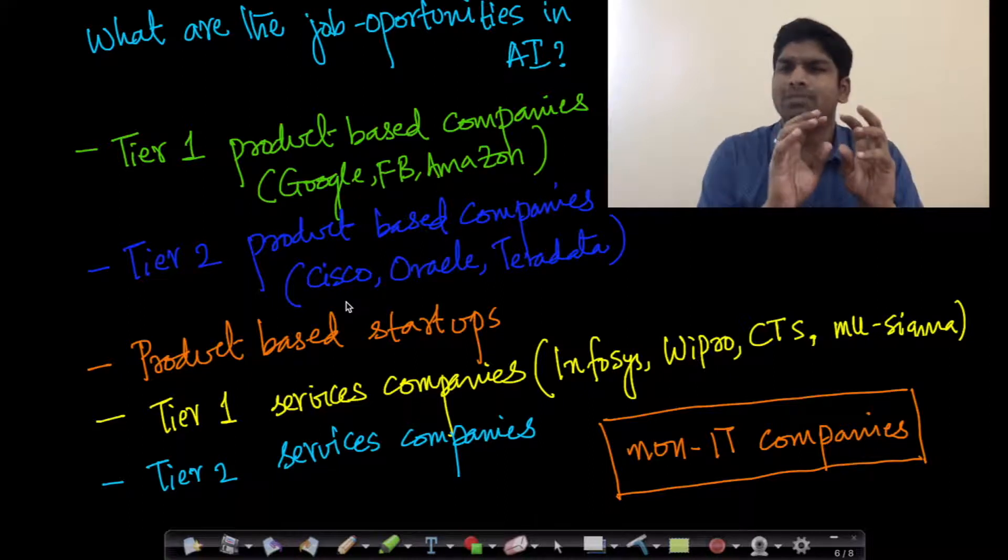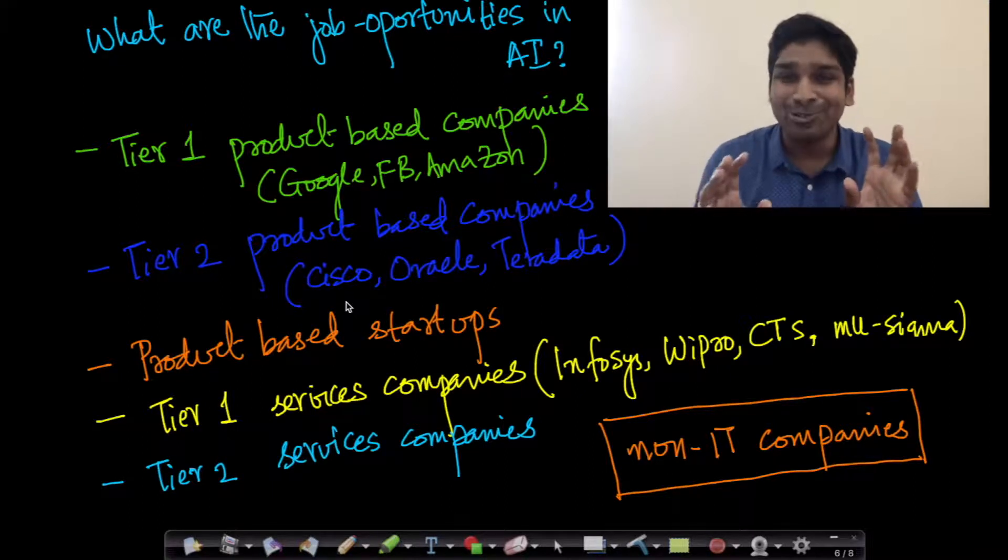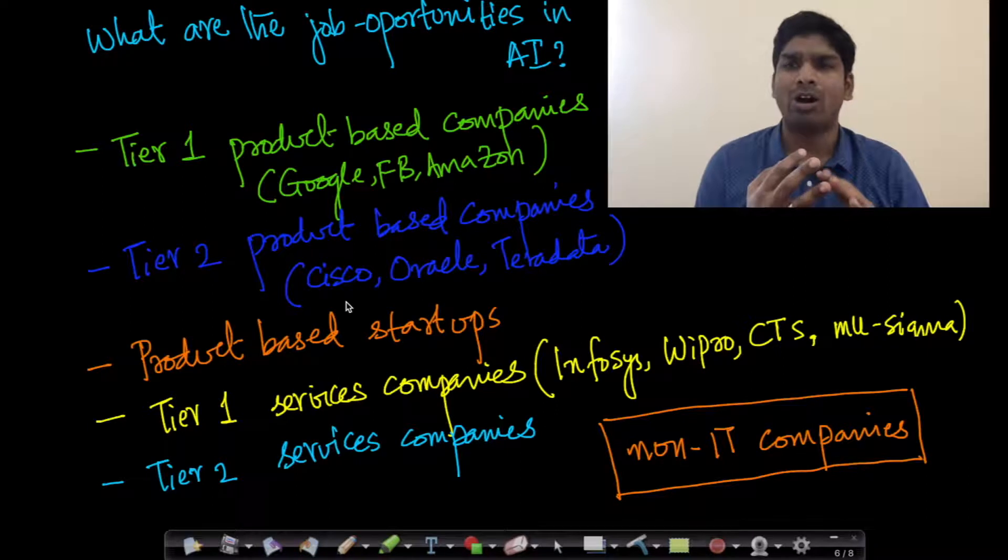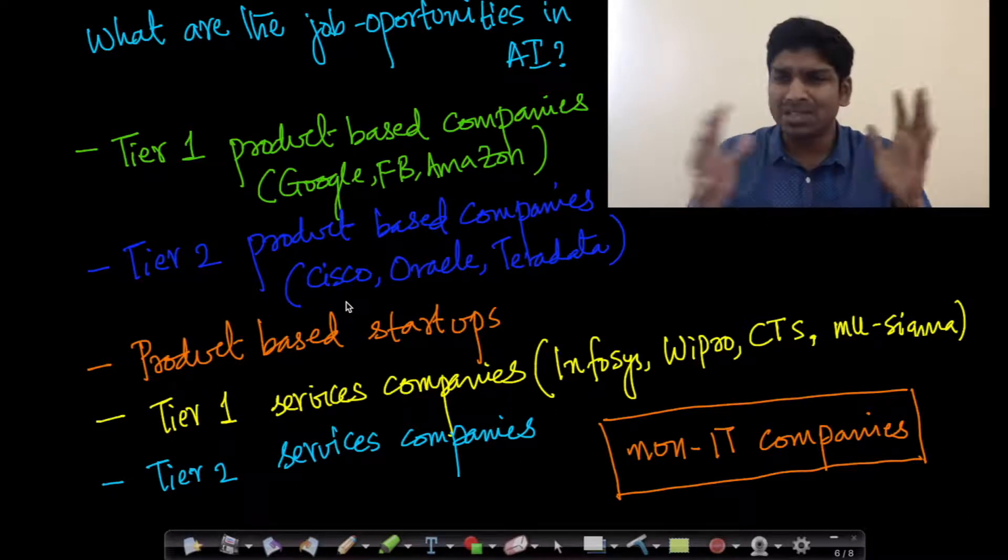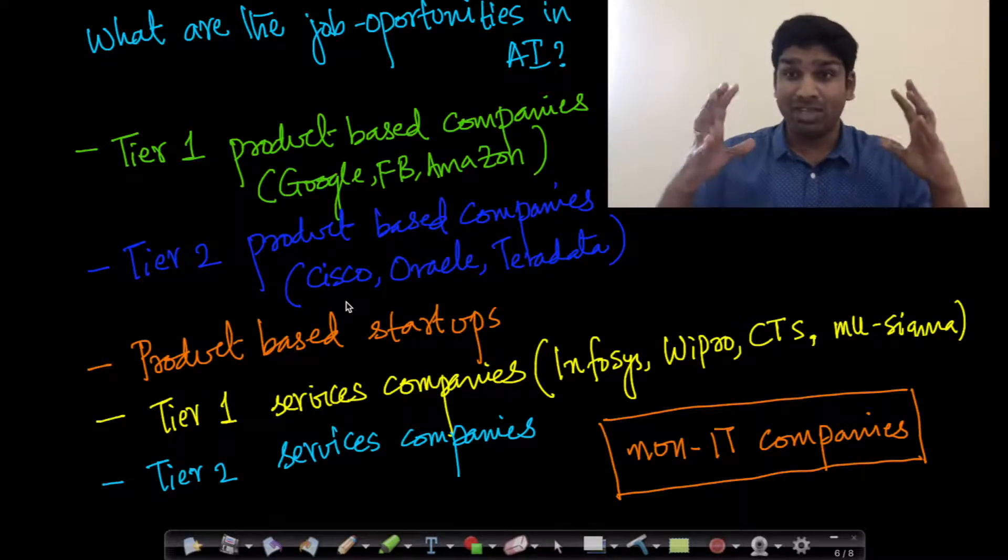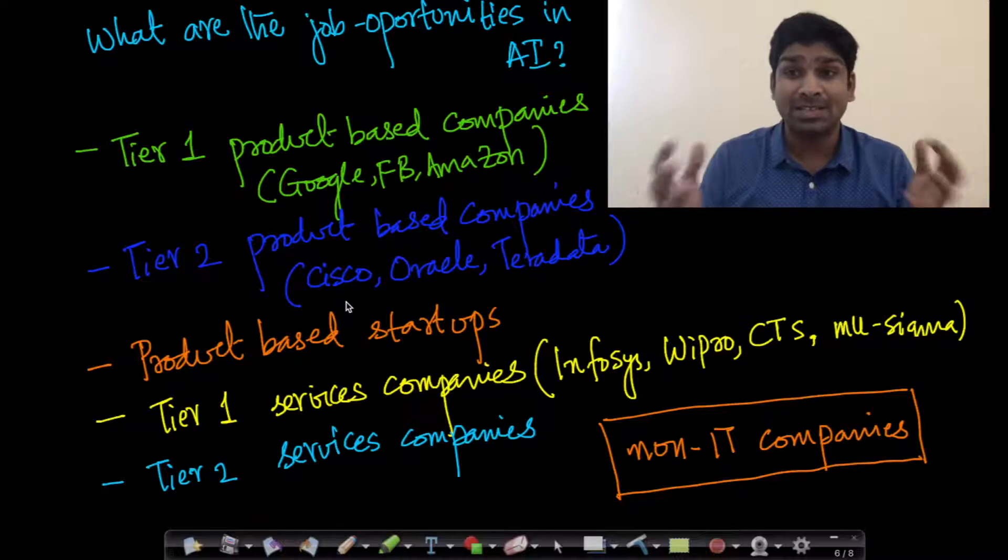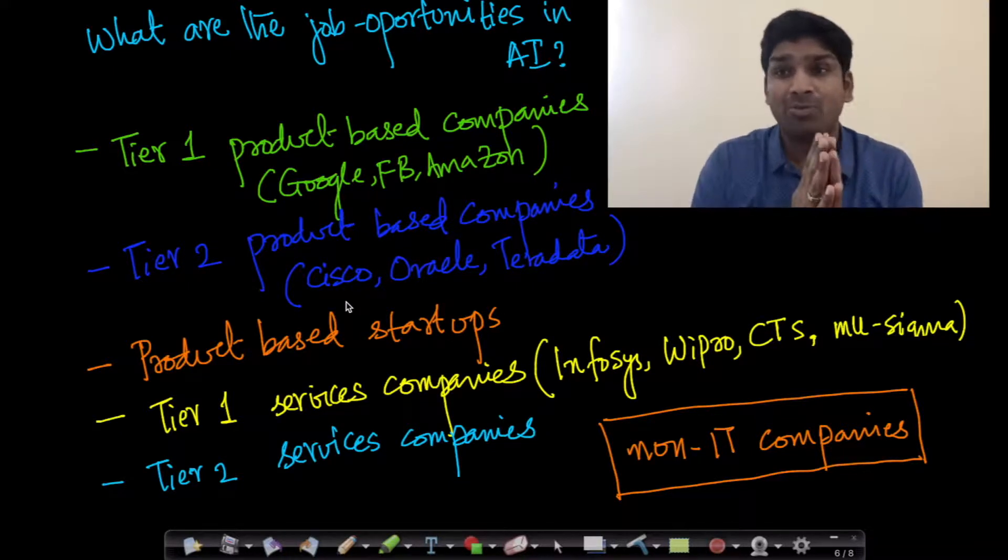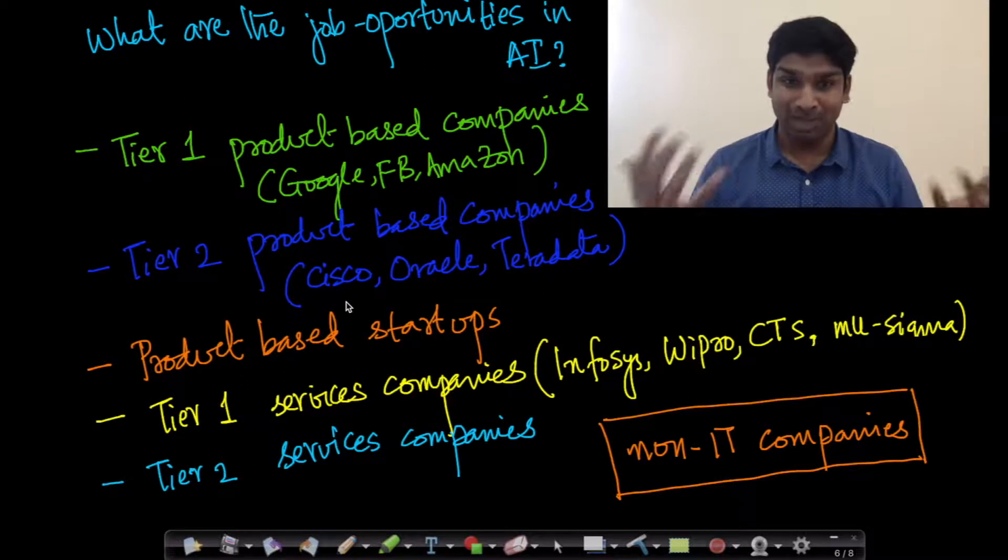The next set of companies—it's unfair to call them tier two because they build great products but in terms of compensation they're slightly different from tier one product based companies. The tier two product based companies like Cisco, Oracle, Teradata, there are a lot of these companies which have a lot of machine learning openings and data science openings today. Based on how skilled a software engineer you are you should be able to make it.